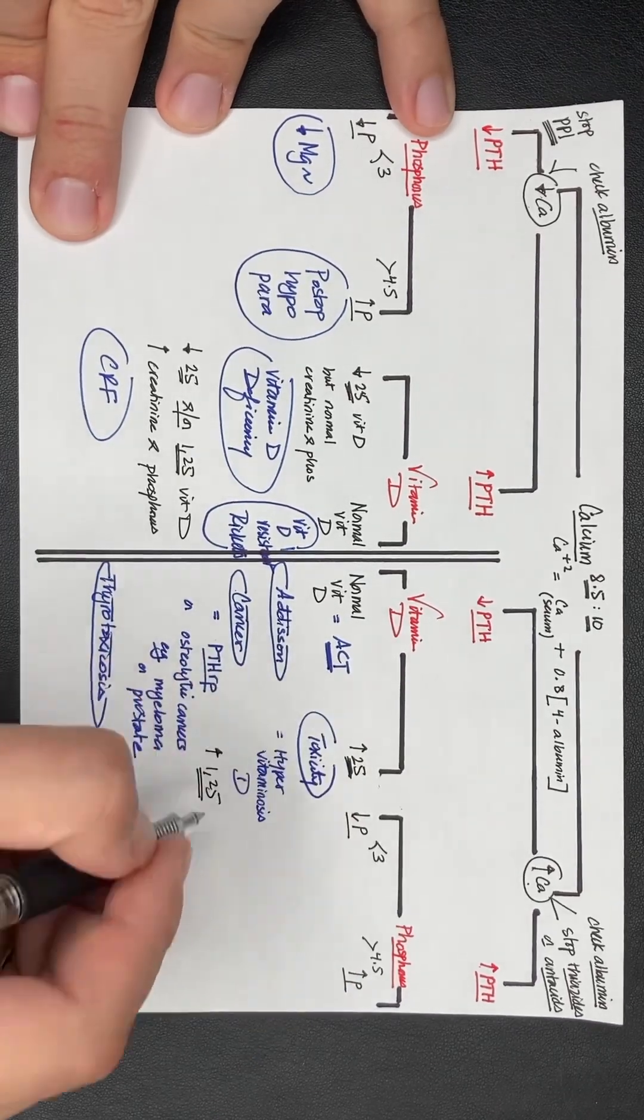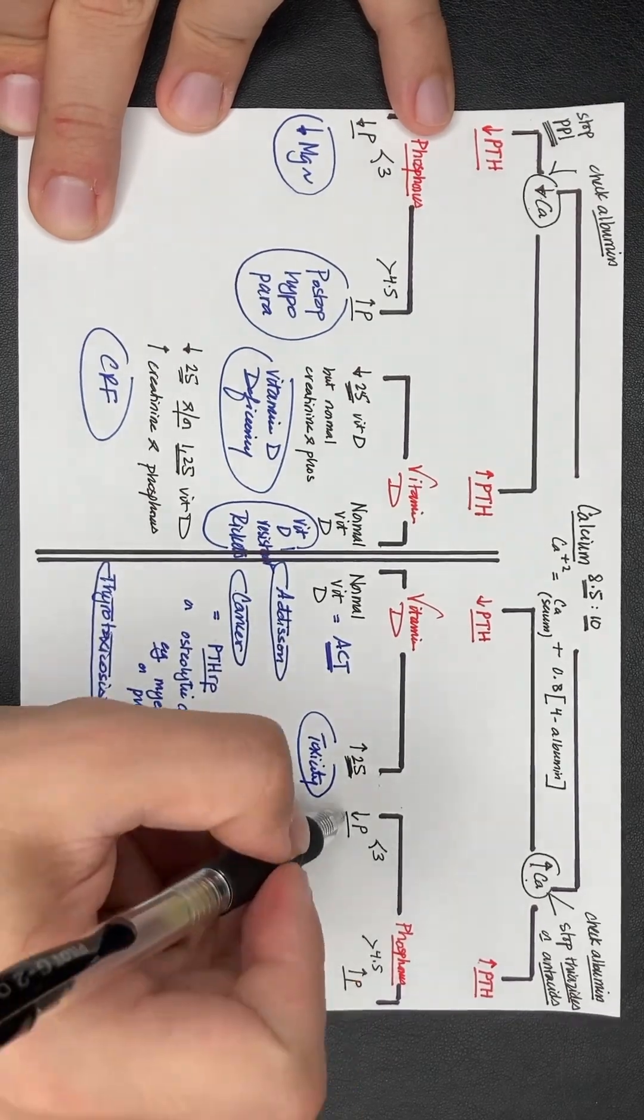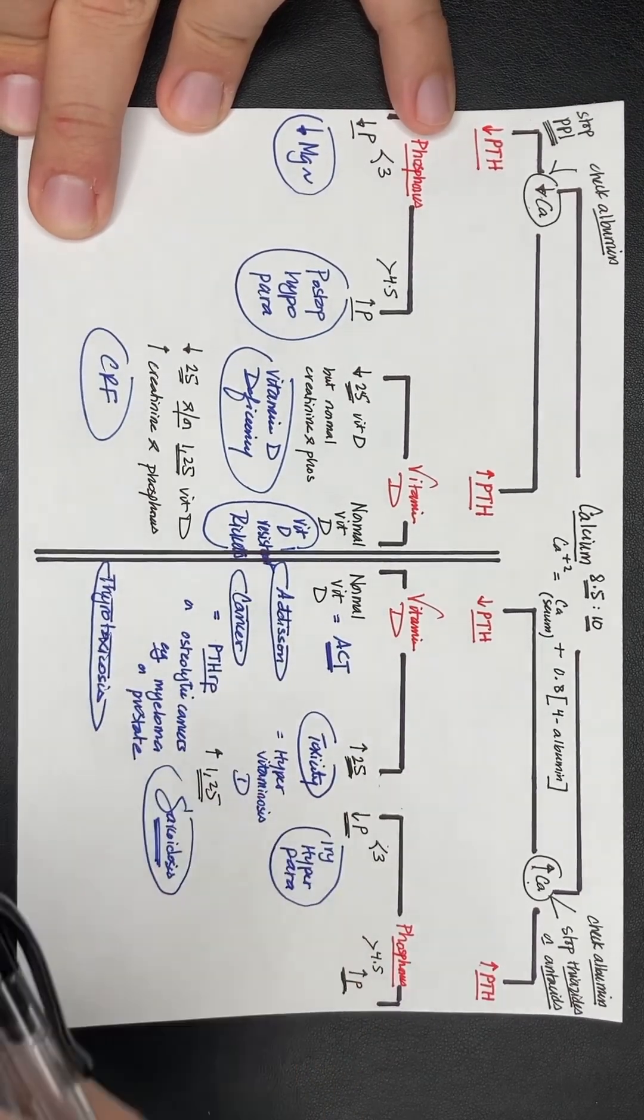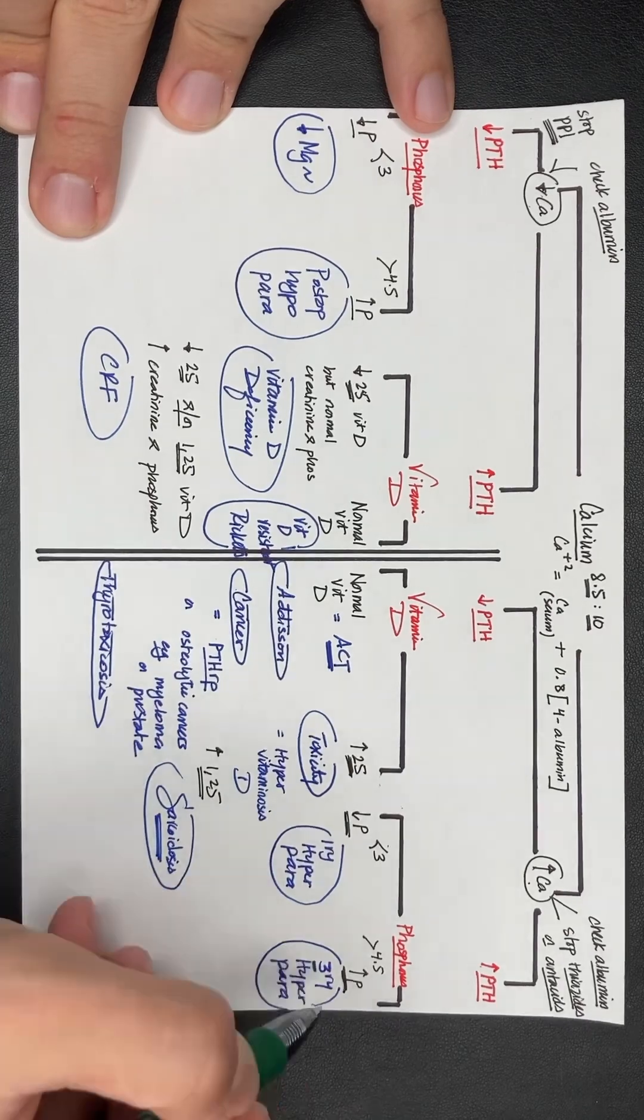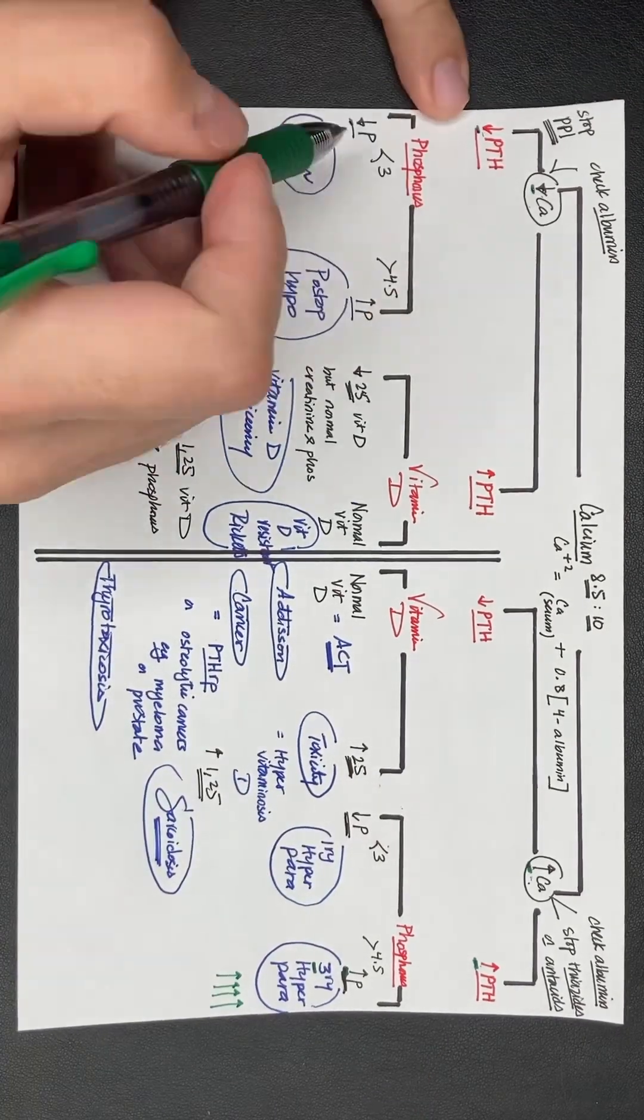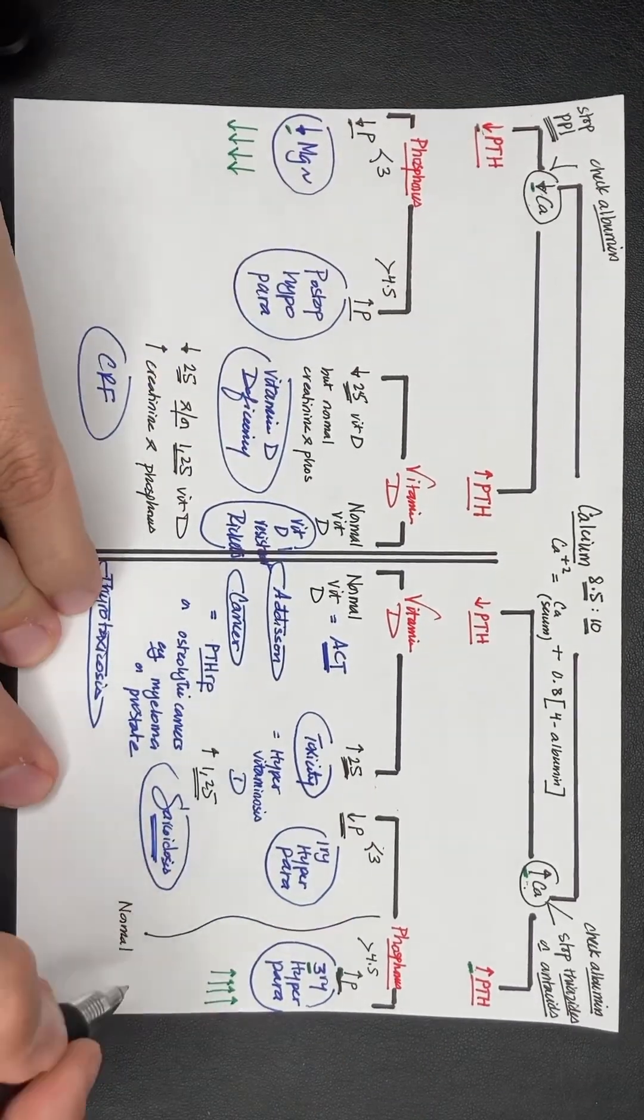So for these questions, you won't realize that you're only going to do two steps. First, you check the parathyroid hormone. And if it's in agreement with the calcium, you check the phosphorus. If they're contradicting, you just check vitamin D.